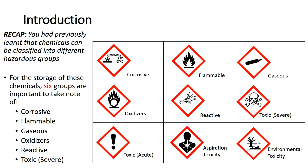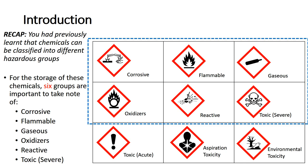You had previously learned that chemicals can be classified into different hazardous groups. For the storage of these chemicals, six groups are important to take note of: Corrosive, Flammable, Gaseous, Oxidizers, Reactive, and Toxic/Severe.